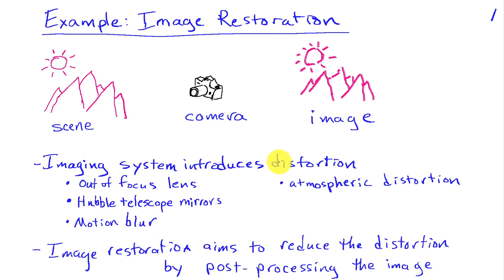There are other sources of distortion that can be introduced by the imaging system, which in this pictorial example is the camera, and that would be things like atmospheric distortion and motion blur.